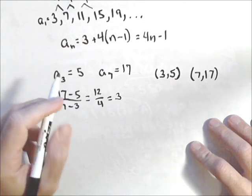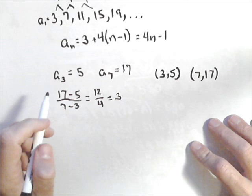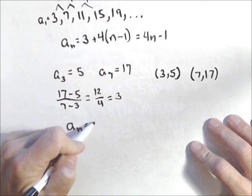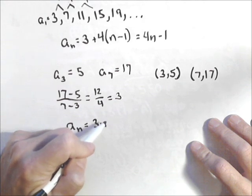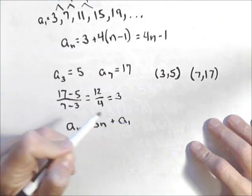And then there's a couple different ways we can find the first term. One is we can repeatedly subtract 3. But if we think back to our linear functions, we know a sub n now is 3n plus whatever our first term is. Let's call it a sub 1.